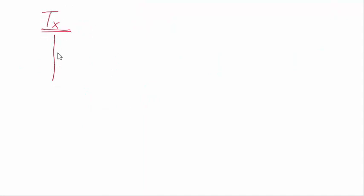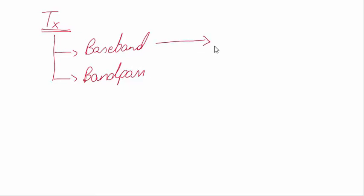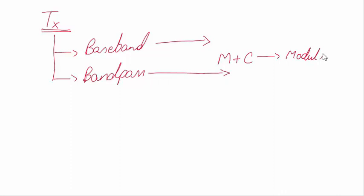One important topic to remember: if you want to transmit a signal, you can do so in two ways. The first is baseband modulation, and the second is band pass modulation. In baseband modulation, you are not going to superimpose your message on a carrier — you transmit the information directly. In band pass modulation, you superimpose your message signal on the carrier and then transmit, so: message signal + carrier = modulated signal.